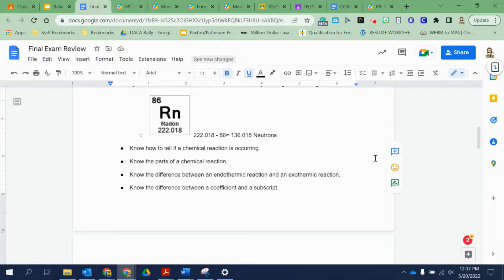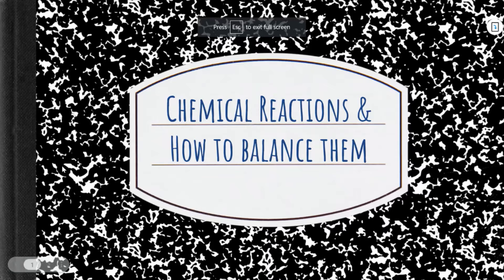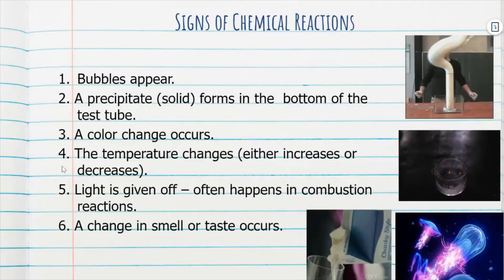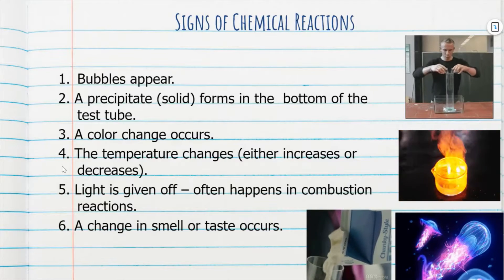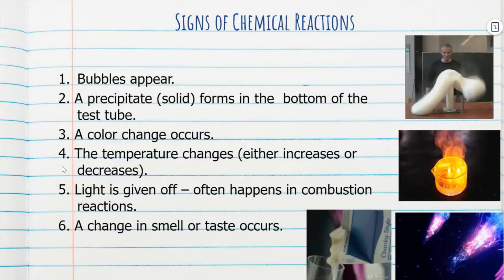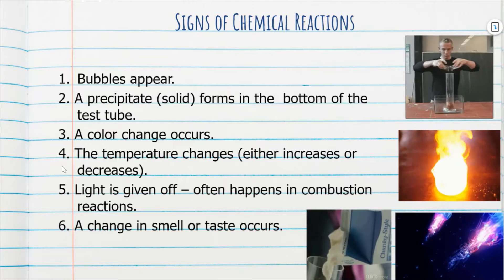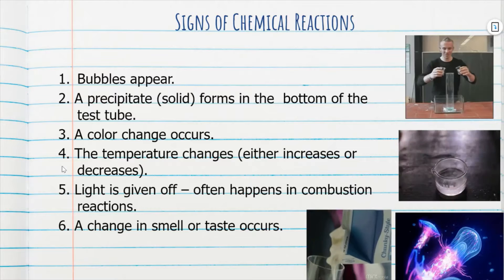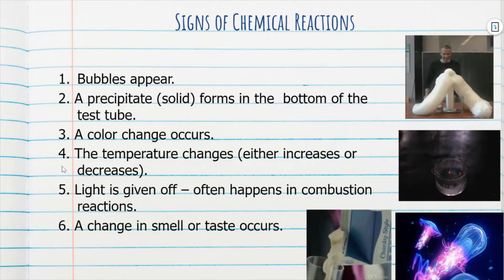Let's look at this part on chemical reactions. Know how to tell what are the signs of a chemical reaction occurring. These are signs of a chemical reaction: bubbles appearing is definitely a sign, and we saw that especially with the calcium lab. A precipitate — a solid forming in the bottom of the test tube — we saw that with the calcium hydroxide Ca(OH)2 that formed when we did our calcium lab. A color change also occurs.